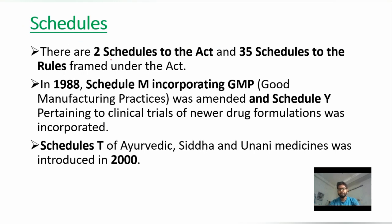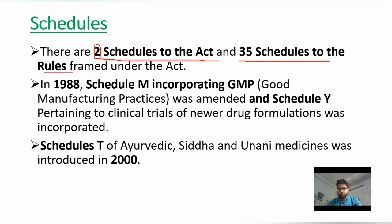Regarding schedules, the Drug and Cosmetics Act has only two schedules — this is very important. However, there are 35 schedules in the Drug and Cosmetics Rules. Students frequently confuse these. In 1988, Schedule M regarding GMP and Schedule Y related to clinical trials were incorporated. Schedule T was incorporated in 2000.